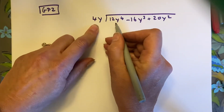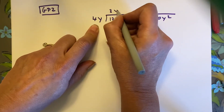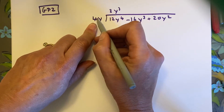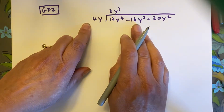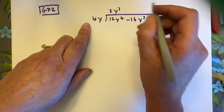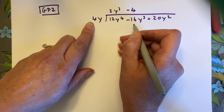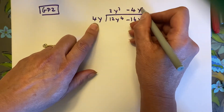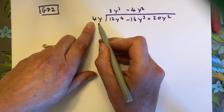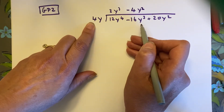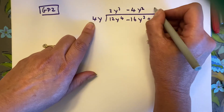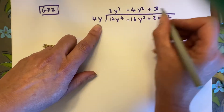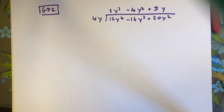What times 4y gives us 12y to the fourth? That's 3y cubed — 3y cubed times 4y equals 12y to the fourth. What times 4y gives negative 16y cubed? Negative 4y squared — since negative 4 gives the negative 16, and y squared times y gives y cubed. For the third term, 5y times 4y gives 20y squared. So the answer is 3y cubed minus 4y squared plus 5y.